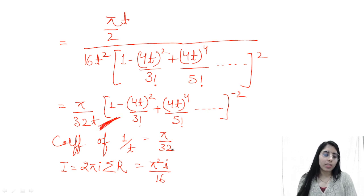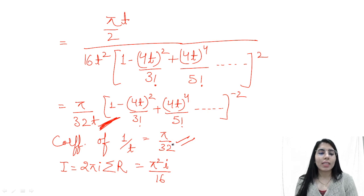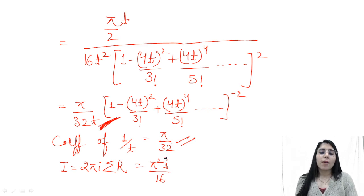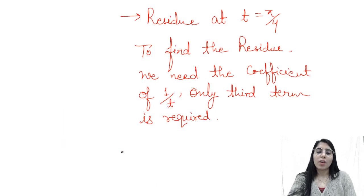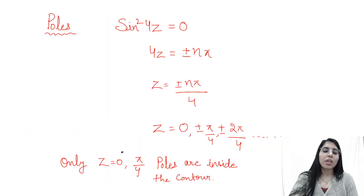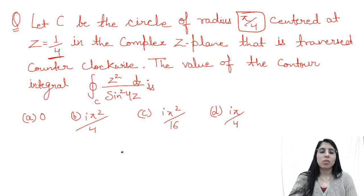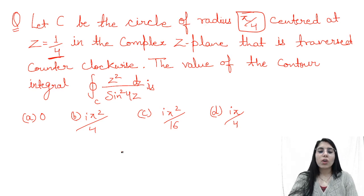The residue at z = π/4 is π/32. The residue at z = 0 is 0. So the contour integral equals 2πi times the sum of residues, which is 2πi × π/32. After simplification, this gives π²i/16. Hence this is the final answer, which corresponds to option C.